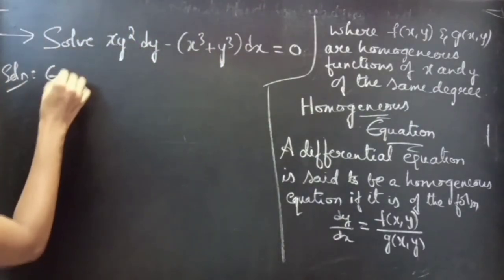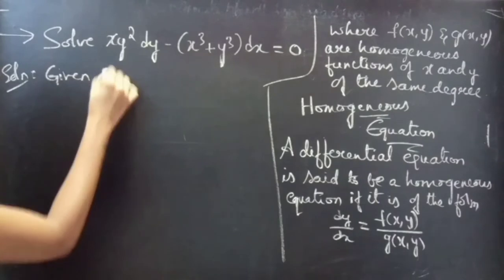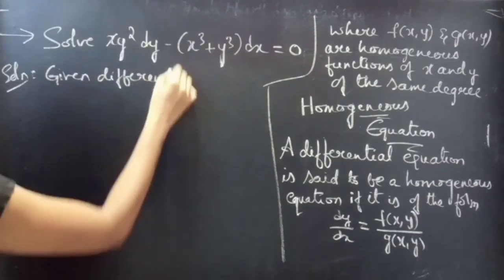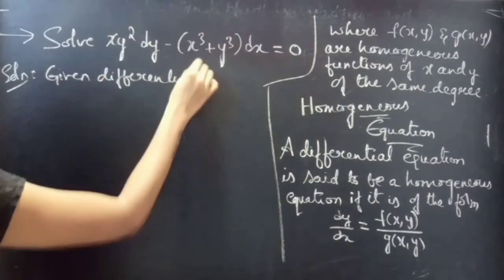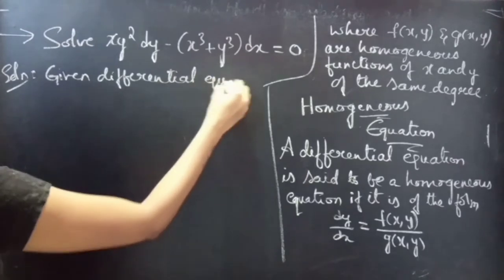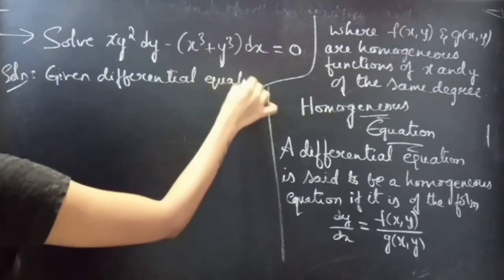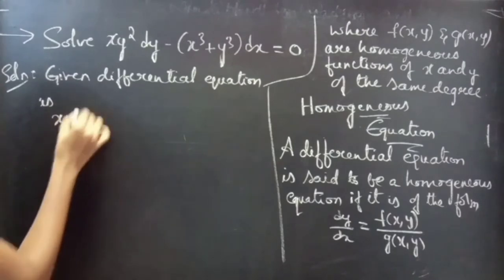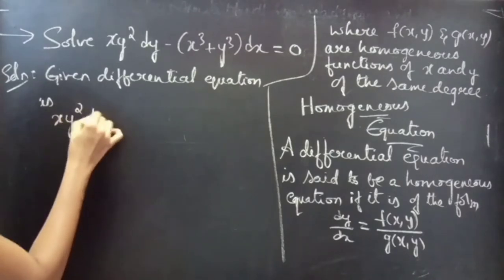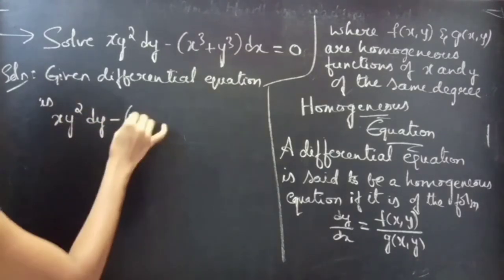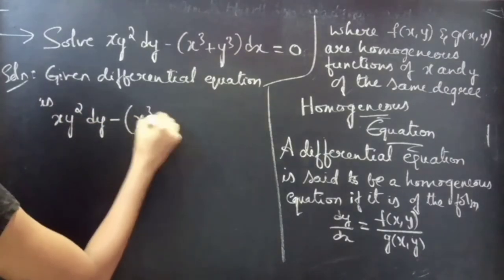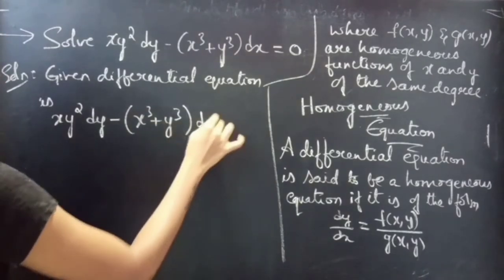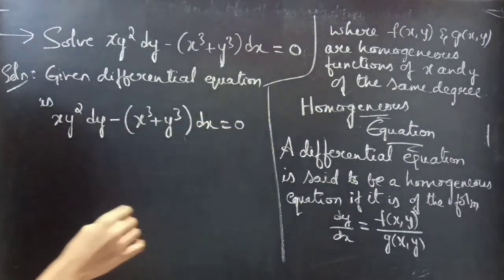The given differential equation is: x y² dy minus (x³ + y³) dx = 0.